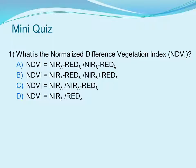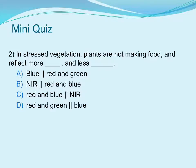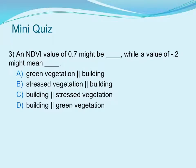There are a series of questions based on this concept module. Question one: what is the Normalized Difference Vegetation Index? Question two: in stressed vegetation, plants are not making food and reflect more blank and less blank. Question three: an NDVI value of 0.7 might represent blank, while a value of negative 0.2 might mean blank. All of the answers to these questions will be in the part two PowerPoint of this concept module.